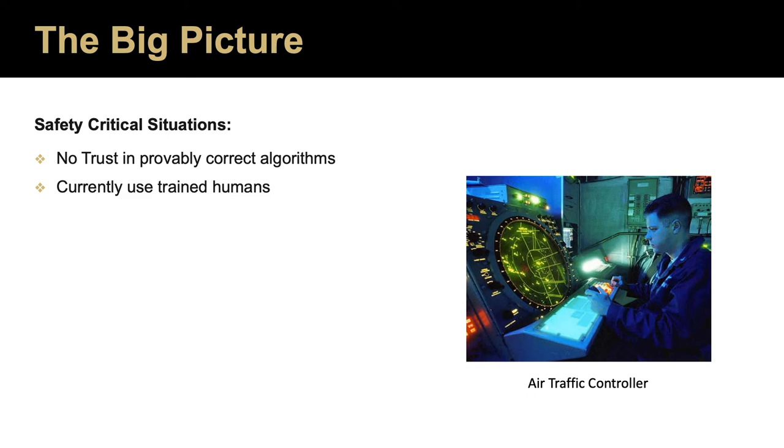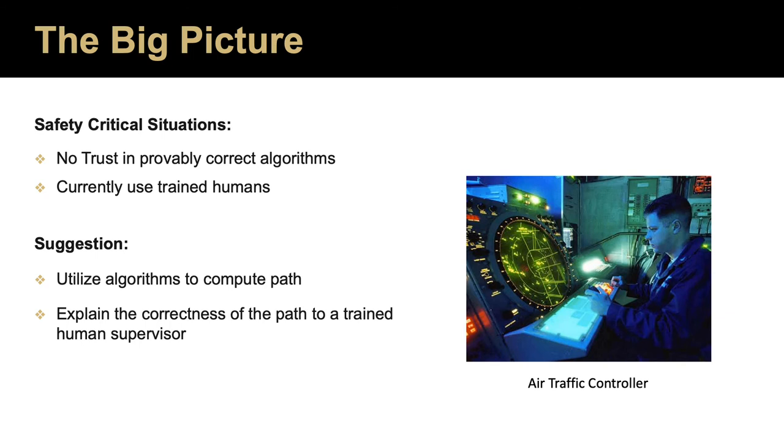This is especially true in safety-critical situations such as air traffic control or hazardous material warehouses. Our solution would allow us to be more efficient in our approach to these problems by utilizing the algorithms to compute a path and then explain the correctness of that path to a trained human supervisor. Once convinced, the human makes the final decision to execute the plan.